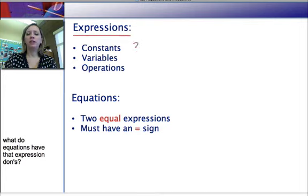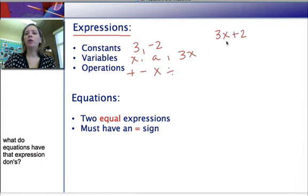So remember, constants are just numbers like 3 or negative 2. Variables, of course, are letters that represent unknown quantities like x or maybe a or maybe even 3x could be a variable term. And then, of course, our operations are addition, subtraction, multiplication, and division. So an example of an expression might be 3x plus 2. We have a variable term, we have an operation, and we have a constant.